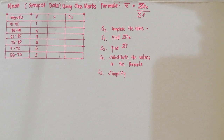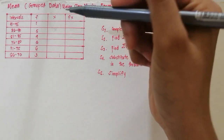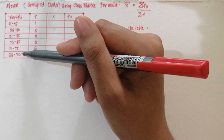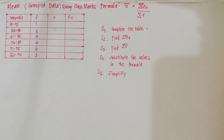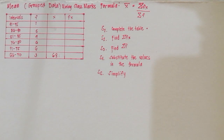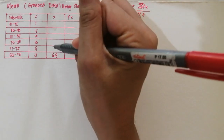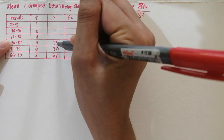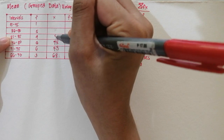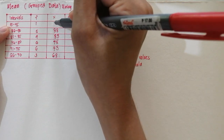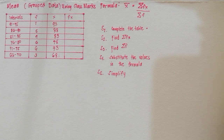Let's have another example. We have another table, and Step 1 again is to complete the table by finding X and FX. Starting at the bottom: the class mark of 66 to 70 is 68; 71 to 75 is 73; 76 to 80 is 78; 81 to 85 is 83; 86 to 90 is 88; and 91 to 95 is 93. We are done finding the class marks.